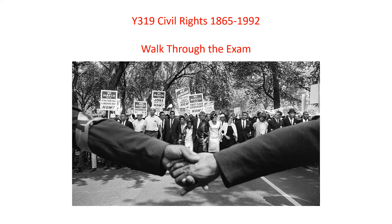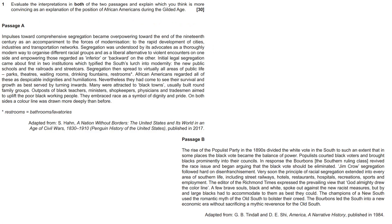Welcome to this Y319 Civil Rights 1865-1992 walkthrough of the exam. The exam is 2 hours and 30 minutes long, and the first question is an interpretations question: evaluate the interpretations in both passages and explain which you think is more convincing as an explanation of the position of African-Americans during the Gilded Age. The first thing to do is read both passages.